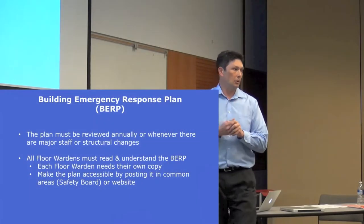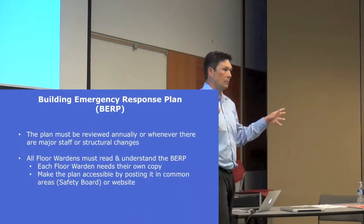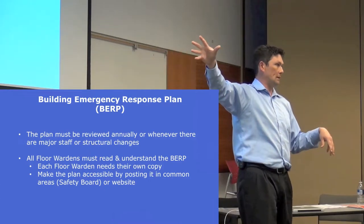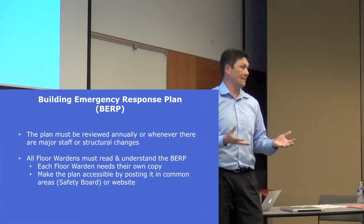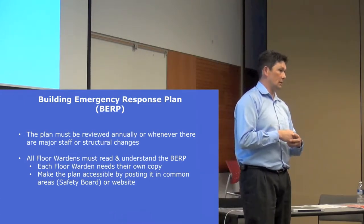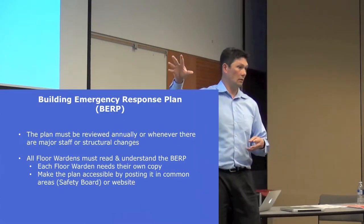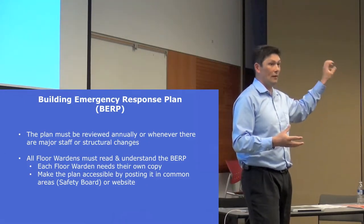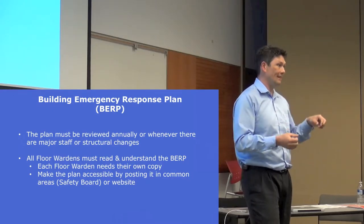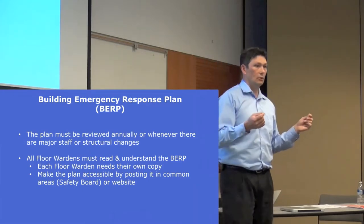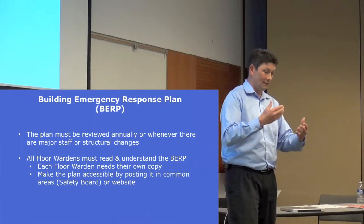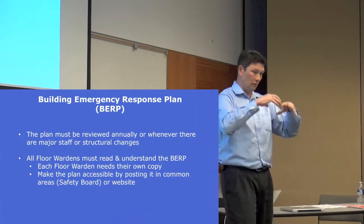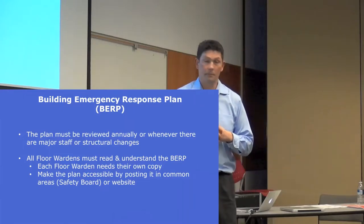Review your plan every year because things change, especially with all the construction across campus. The construction in the middle area probably threw a wrench in everybody's plans and your assembly area likely changed. Look for small changes — maybe a lab went under renovation and a fire extinguisher was moved. If that happens, you've got to redo your emergency procedure plan on the walls of your building, because if somebody looks at it and goes to get the fire extinguisher and it's not there, that's a serious issue. All floor wardens must understand the BIRP — it's a simple document, and if you think it needs changing, let us know.